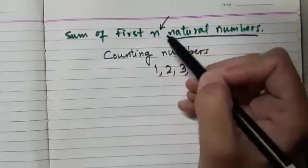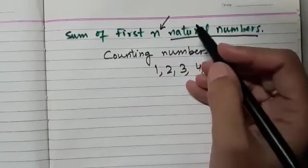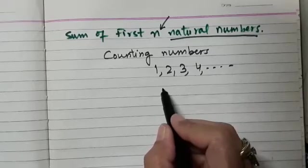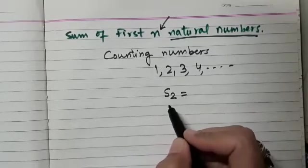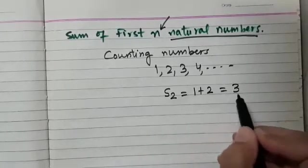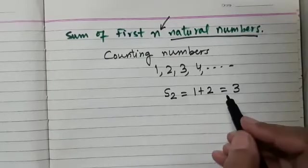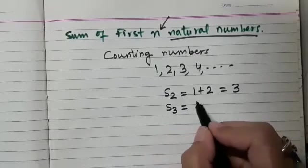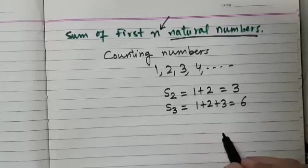So n can be any. For example, I say what is the sum of first 2 natural numbers? So first 2 natural numbers are 1 and 2. So S2, that is sum of first 2 natural numbers will be 1 plus 2 which gives us 3. Now what is the sum of first 3 natural numbers? So this will be S3 which is equal to 1 plus 2 plus 3 that gives us 6.